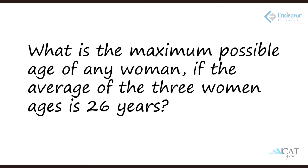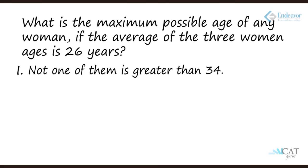Next question: what is the maximum possible age of any woman if the average age of 3 women is 26 years? With 3 women and an average of 26, the total age is 78. Statement one says not one of them is greater than 34. There is no lower limit, so if one woman is 34, the other two together are 44 — for example, 22 and 22. The maximum age possible is 34, since no one can exceed it.